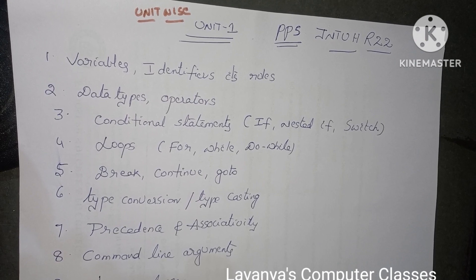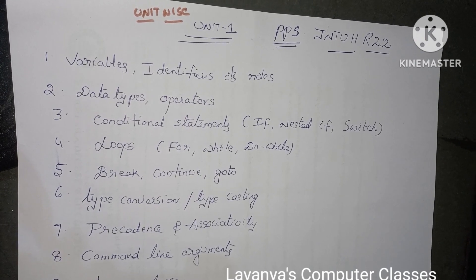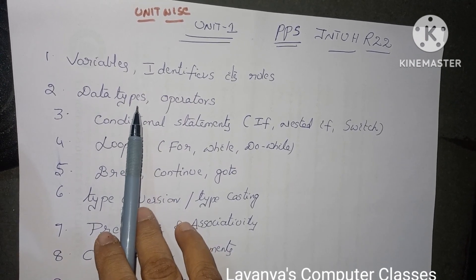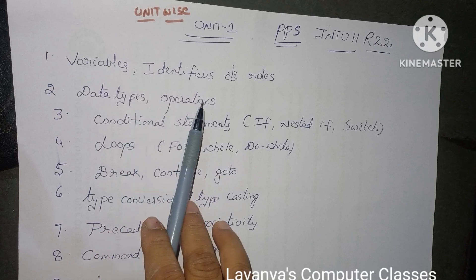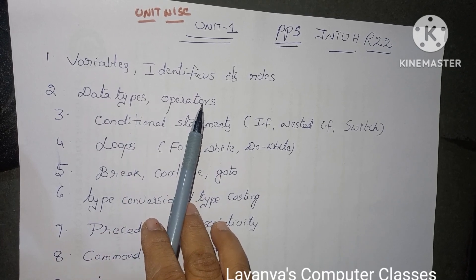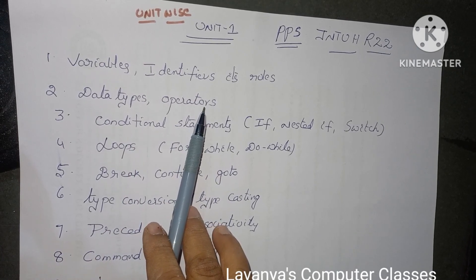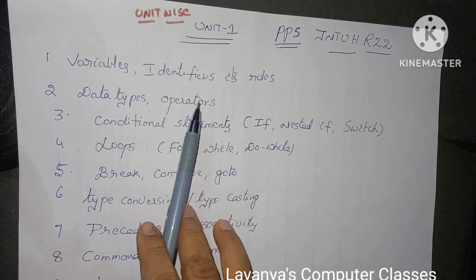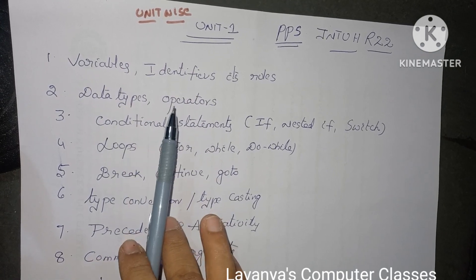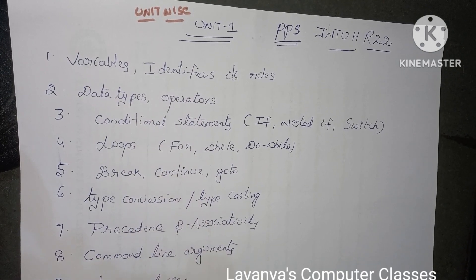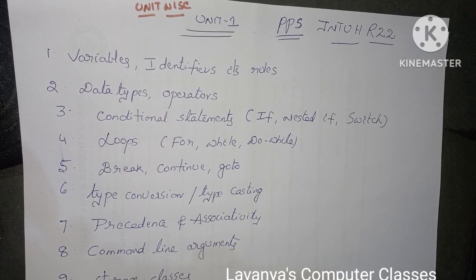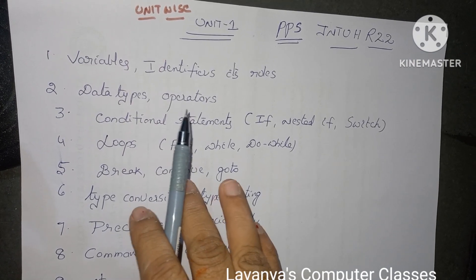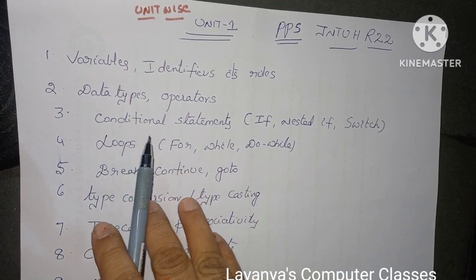Next question: what is a data type and explain the different types of data types? It is a 5-mark type question. Also, what is an operator and explain the different types of operators? I have done many videos on this complete Unit 1 — notes are available on my Lavanya's computer classes channel.